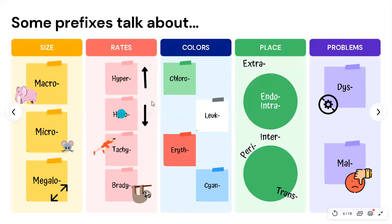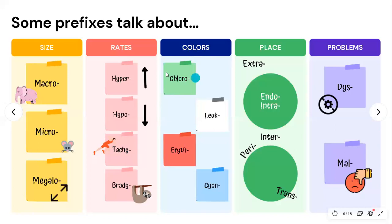For rates, we have 'hyper' meaning high, 'hypo' meaning low, 'tachy' meaning fast — as in tachycardia — and 'brady' meaning slow — as in bradycardia. For colors, prefixes include 'chloro' related to green, 'leuko' related to white, 'erythro' related to red, and 'cyan' related to blue.